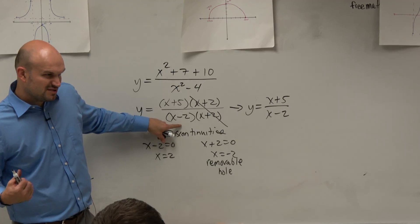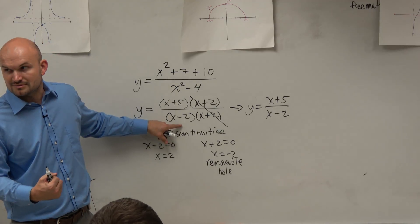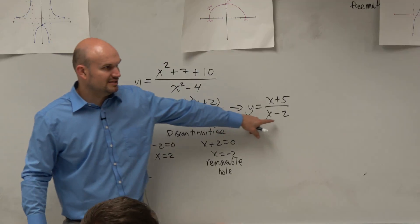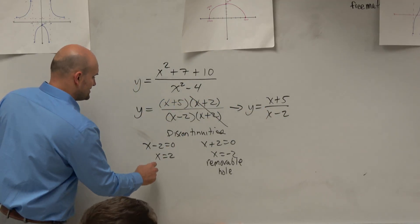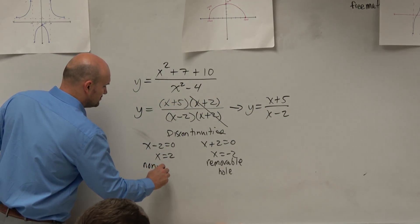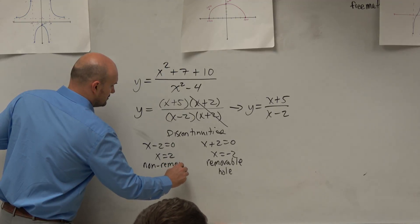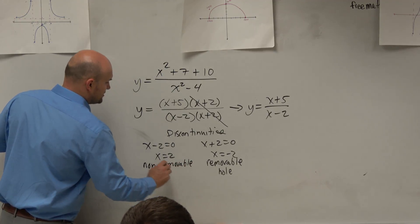Do you guys see how x minus 2 stayed strong, held its roots? Right? So it's still in the simplified version. So x minus 2 is non-removable. And that is a vertical asymptote.